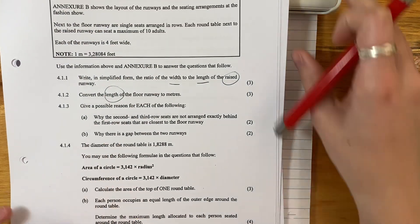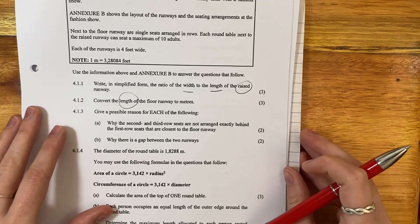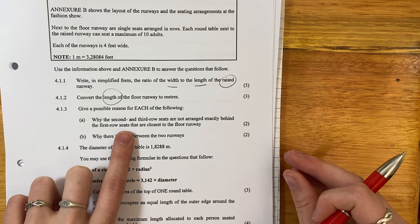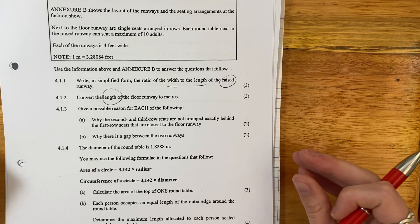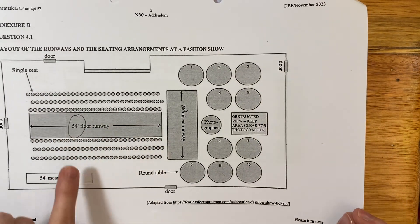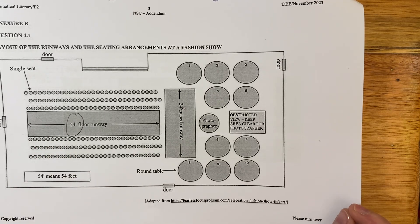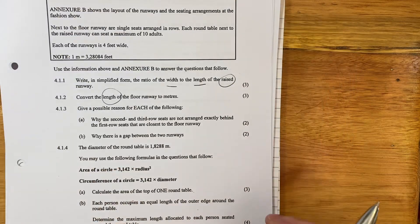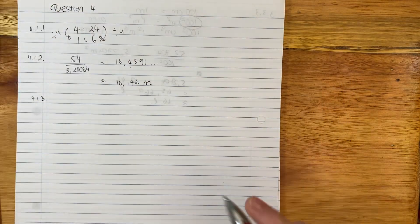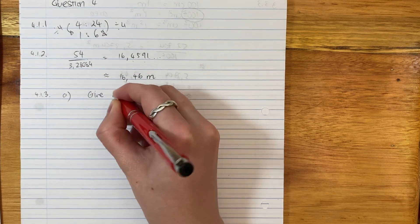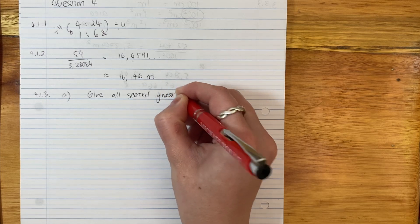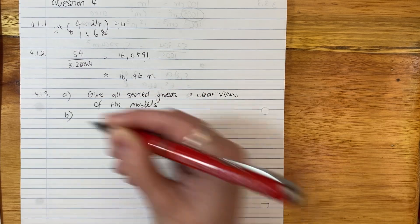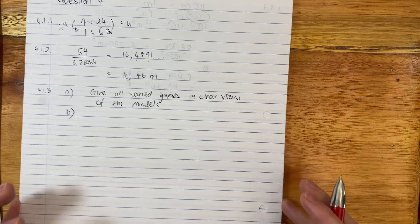Give a possible reason for each of the following. Why the second and third seats are not arranged exactly behind the front row seats that are closest to the floor runway. Do you see that they're not exactly behind each other? If you've ever been to a show, you know why. It's to give everyone a clear view of the models. So let's write that as our answer: Give all seated guests a clear view of the models.